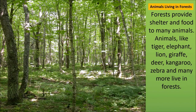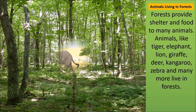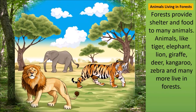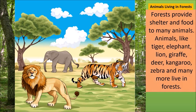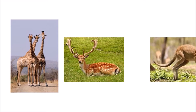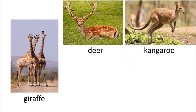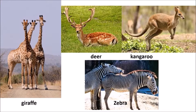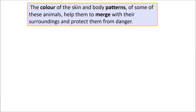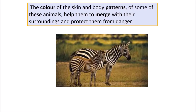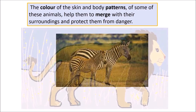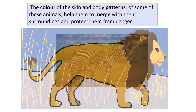Next, animals living in forests. Forests provide shelter and food to many animals. Animals like tiger, elephant, lion, giraffe, deer, kangaroo, zebra, and many more live in forests. The colour of the skin and body patterns of some of these animals help them to merge with their surroundings and protect them from danger.